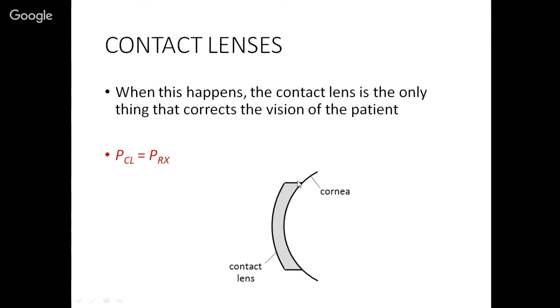So when this happens, when the back surface of the contact matches the cornea surface, then the amount of refractive power that they need, the amount of dioptric power that that person needs to correct their vision, that will be the same as the amount of power that's in the contact lens, the total contact lens power. You might be thinking, well, yeah, that makes sense. Of course they're going to be the same. That's how vision gets corrected.